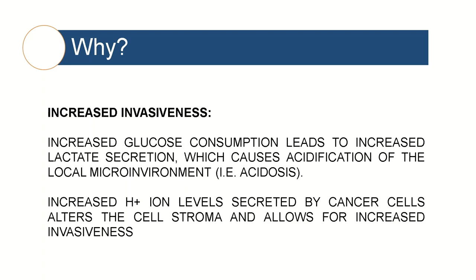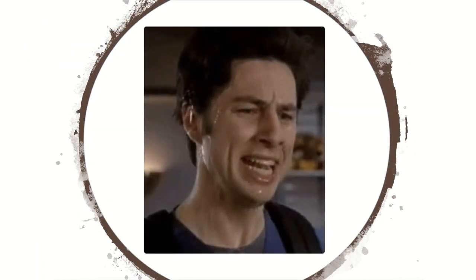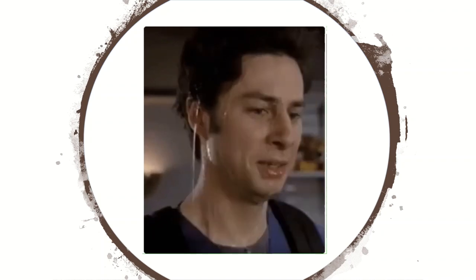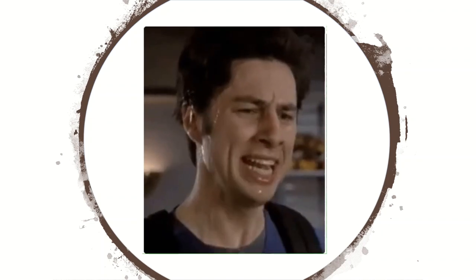The last explanation is called increased invasiveness. By using glycolysis instead of oxidative phosphorylation, it allows cancer cells to have increased invasiveness. The increased glucose consumption leads to increased lactate secretion, which causes an acidification of the local microenvironment — an acidosis. Because of the increased hydrogen ion levels secreted by the cancer cells, this ulcerates the cell stroma and allows for increased invasiveness of the cancer cells. When looking at these four explanations together, they go hand in hand — they explain how cancer cells ensure adequate ATP production even in the absence of oxygen, and how they proliferate and invade the cell stroma.